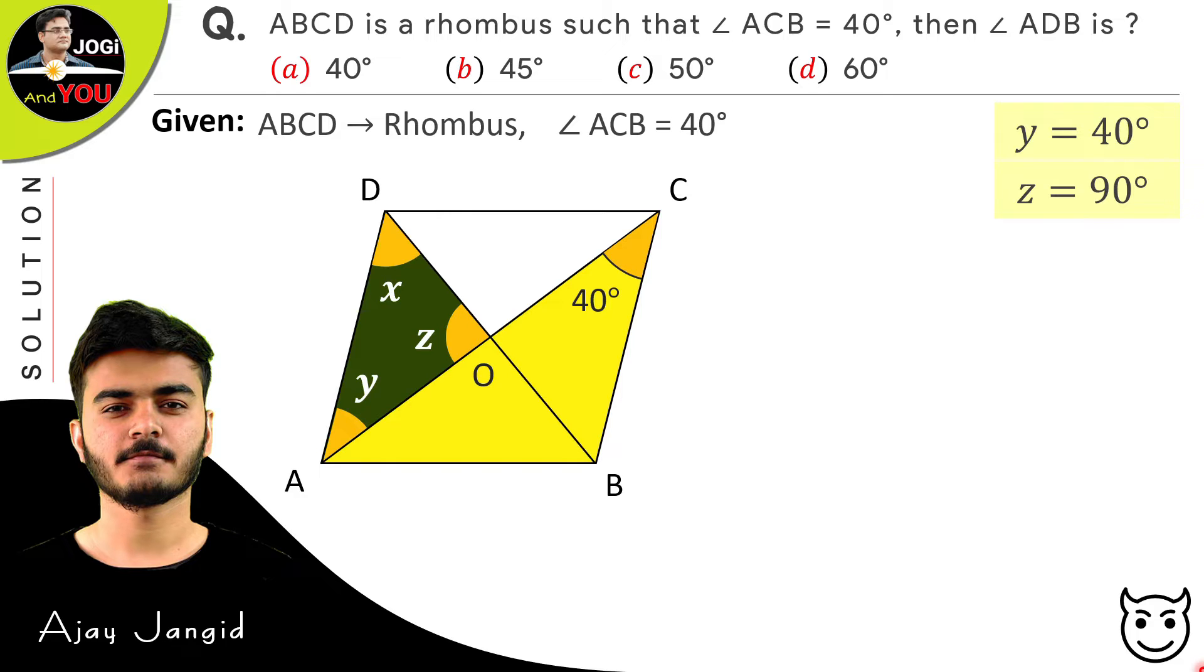Now just see this green triangle AOD carefully. In this triangle we have three angles: X, Y, and Z. And the sum of X, Y, Z is 180 degrees, because we know that the sum of all interior angles of a triangle AOD is 180 degrees.